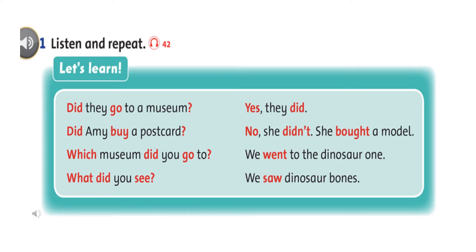Listening 42, listen and repeat. Did they go to a museum? Yes, they did. Did Amy buy a postcard? No, she didn't. She bought a model. Which museum did you go to? We went to the Dinosaur One. What did you see? We saw dinosaur bones.